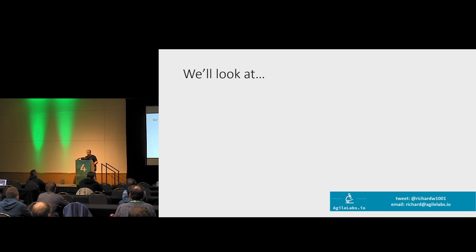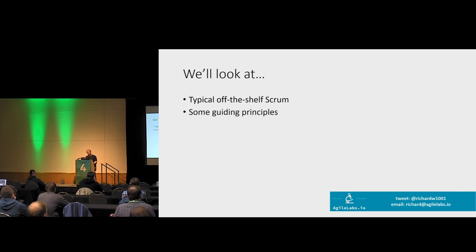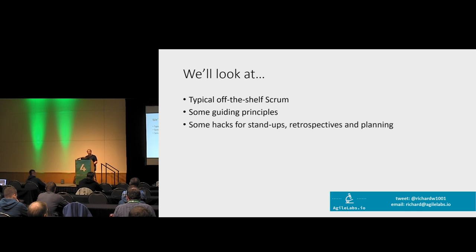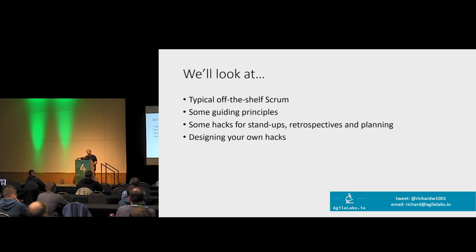In this talk, we'll look at a few things. We'll start by running over a typical off-the-shelf Scrum, just to make sure we all have the same starting understanding. We'll look at some guiding principles — things that can help us when we think about what might be an improvement or a bad direction. There are three main ceremonies in Scrum: stand-ups, retrospectives, and planning. We'll look at hacks for these, and then look at designing your own hacks.